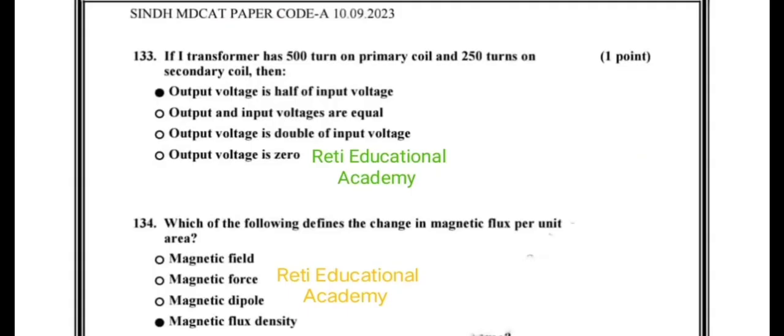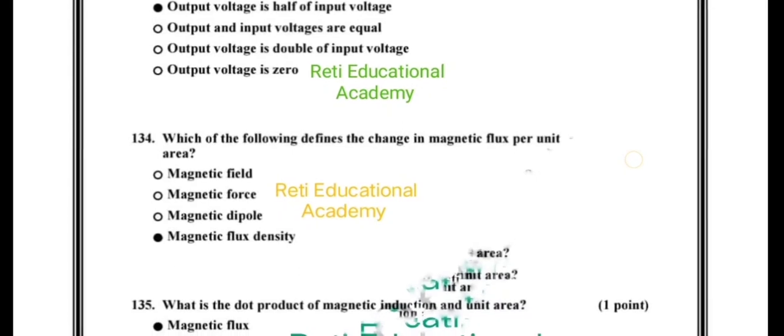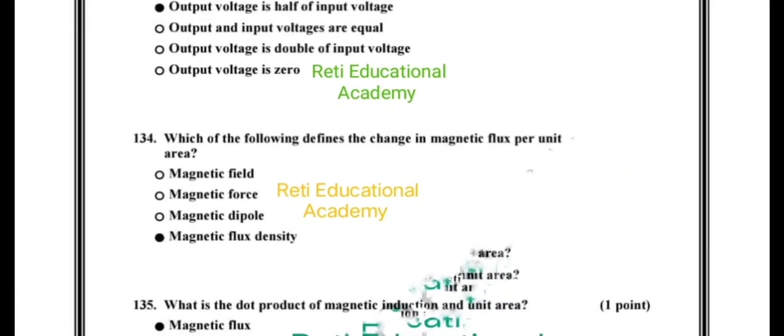Question number 133: If a transformer has 500 turns on primary coil and 250 turns on secondary coil, then the correct option is output voltage is half of input voltage. Question number 134: Which of the following defines the change in magnetic flux per unit area?